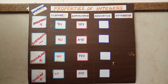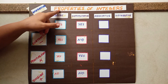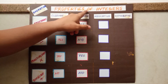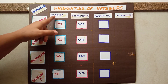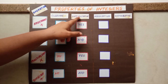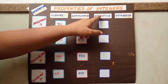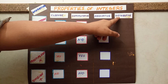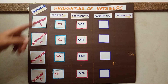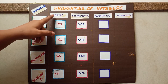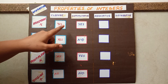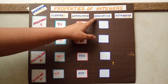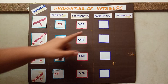Hello, my ideas. In the previous class we were discussing about the properties of integers. What are the properties? Closure property, commutative property, associative property, and the last one is distributive property. We already studied closure property and commutative property. Today we can study associative property.